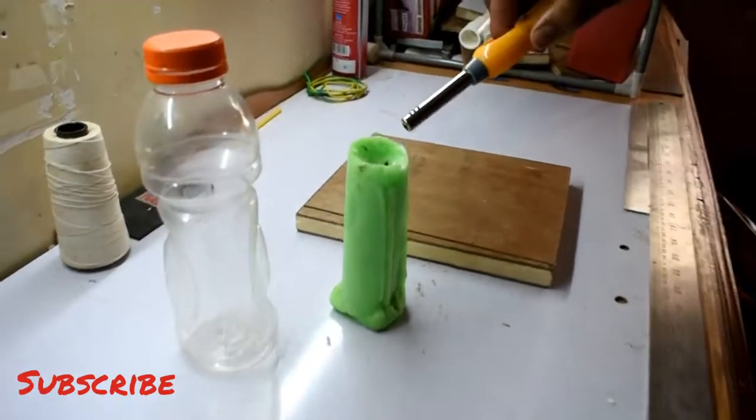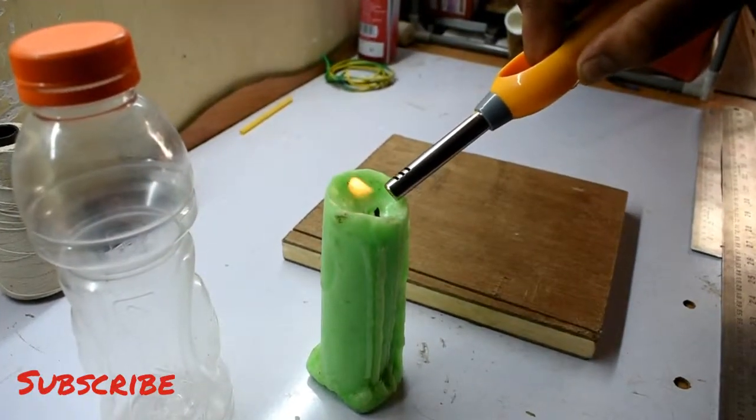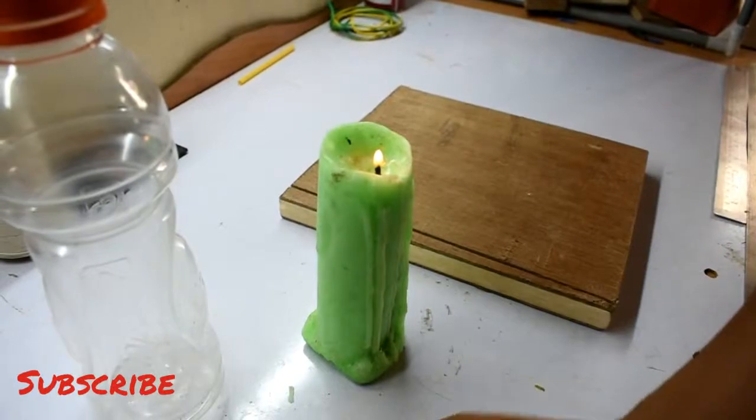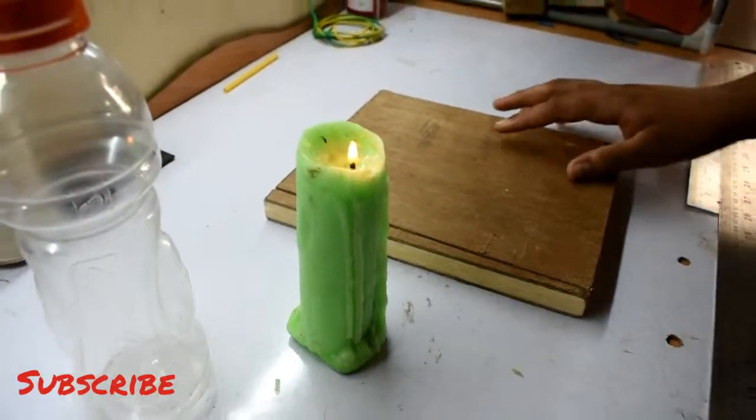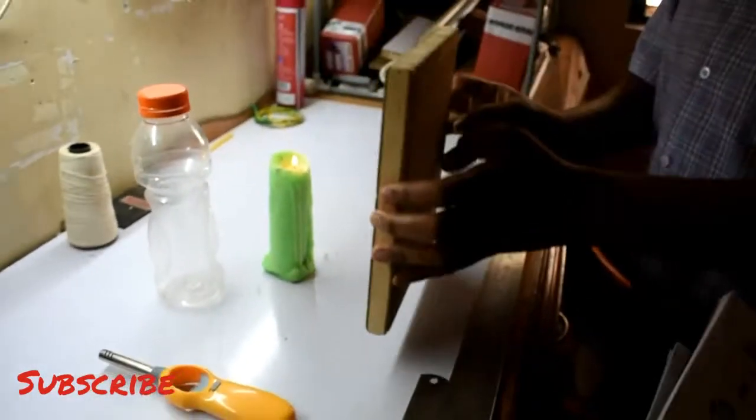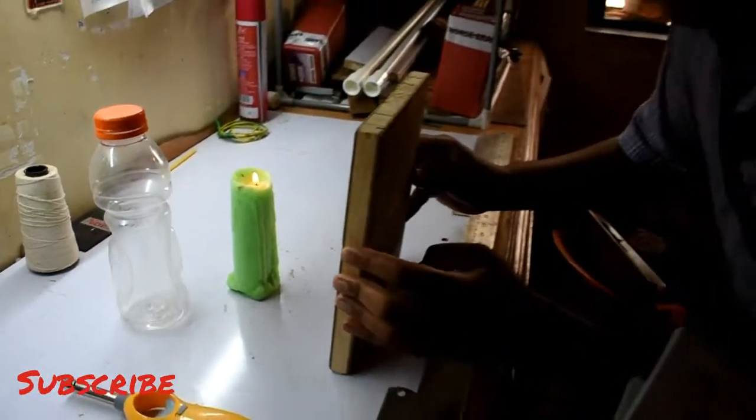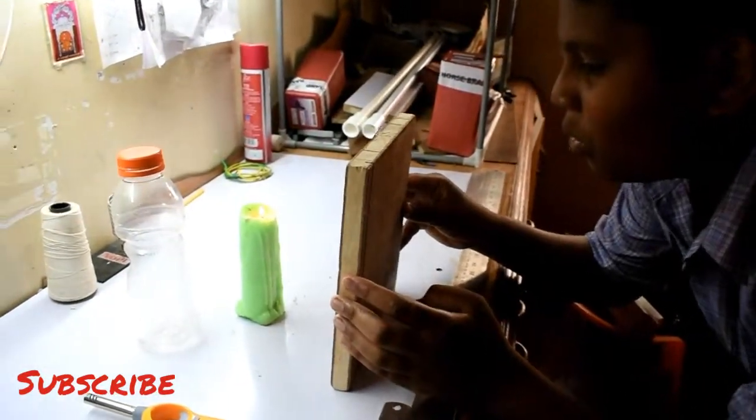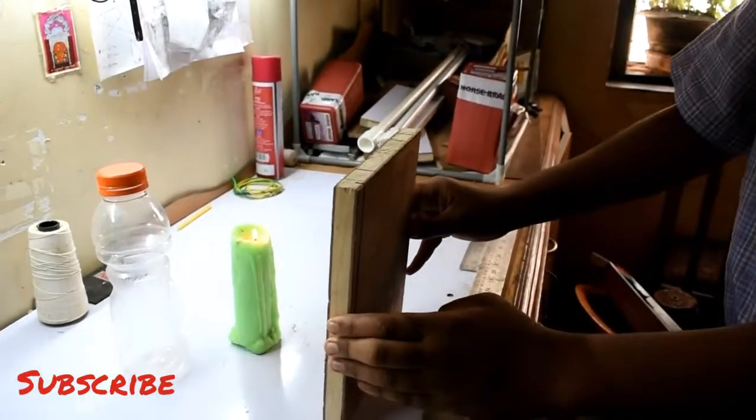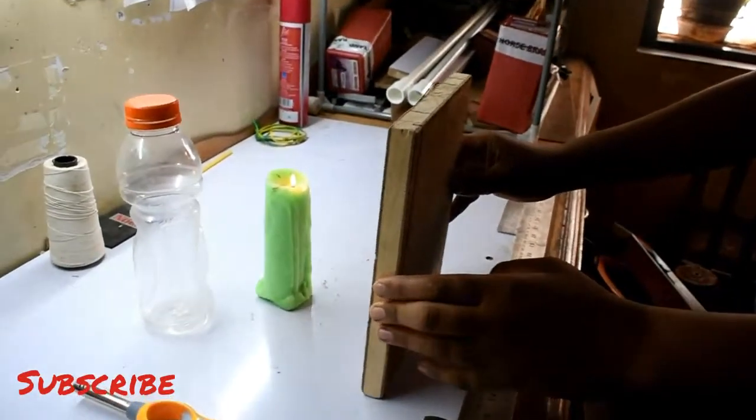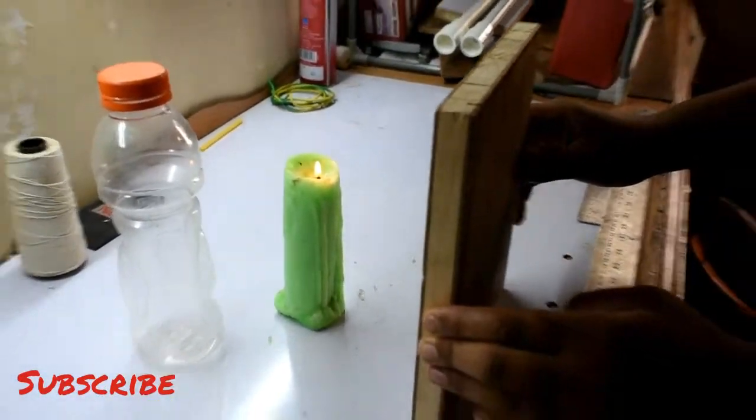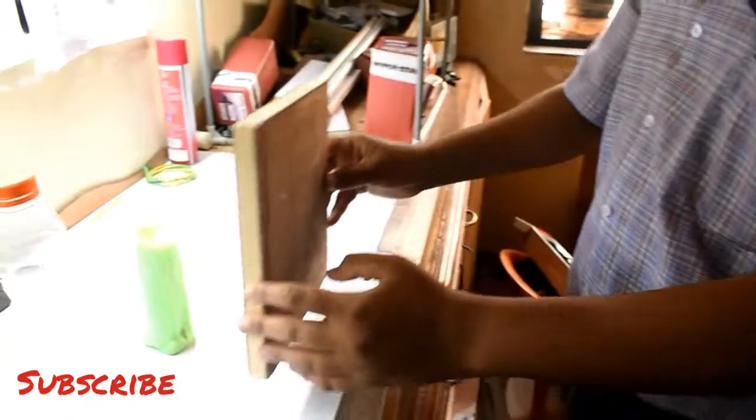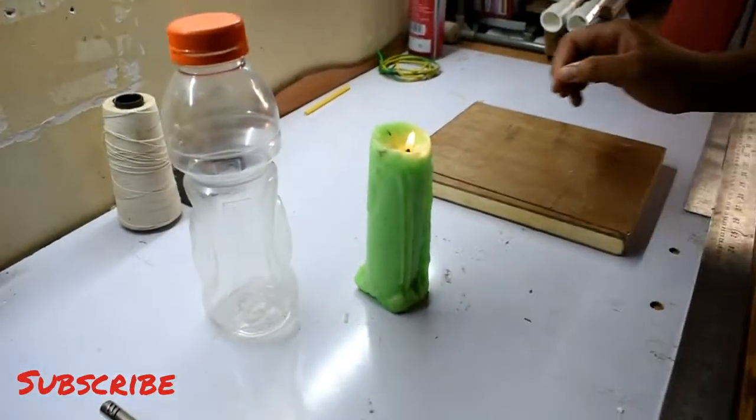Now keep the wooden block in front of the candle. Now try to blow the air. The air does not reach the candle because the piece of wood is blocking it.